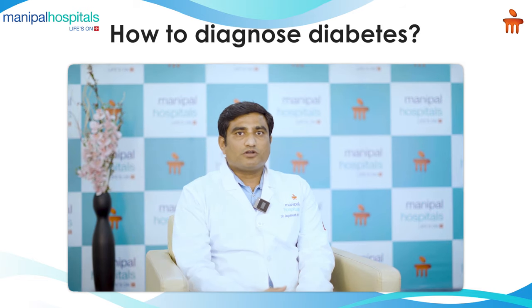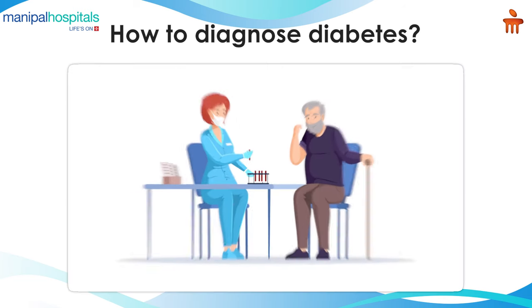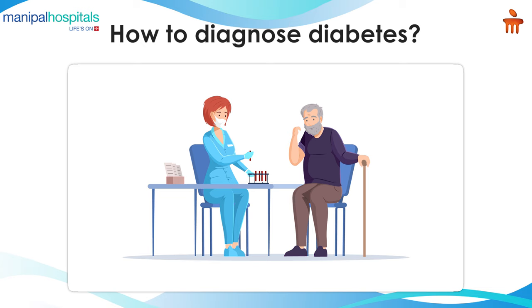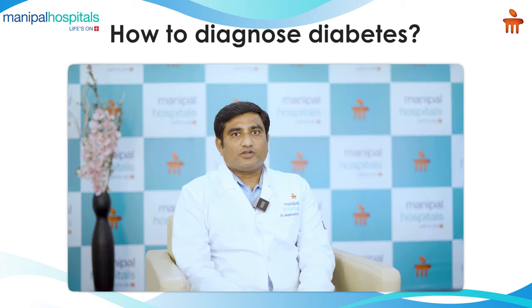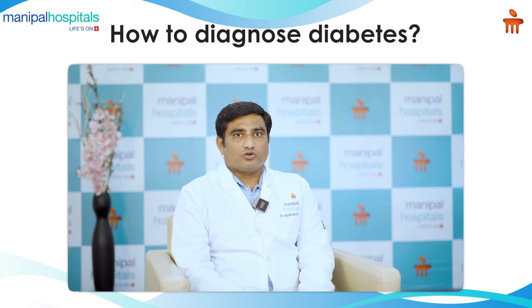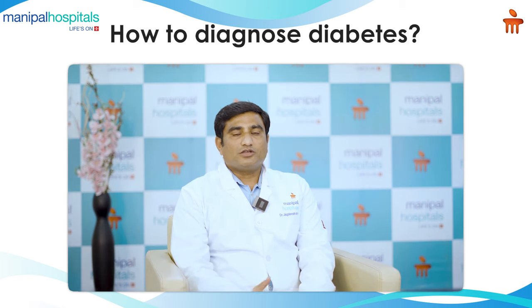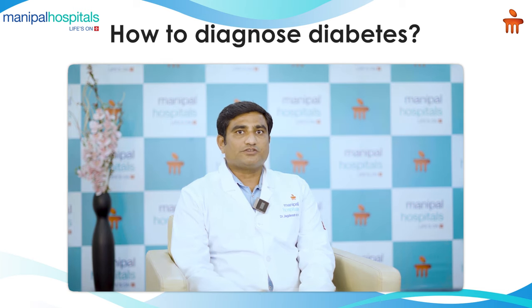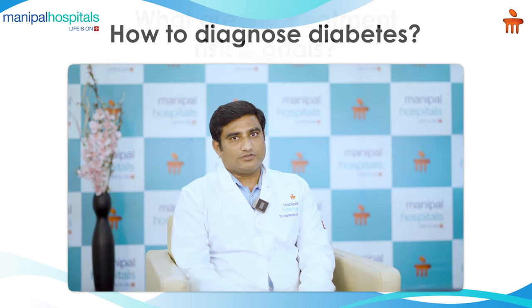Symptomatic patients need to be screened. For asymptomatic patients, those above 35 to 40 years, or those with a first-degree relative with diabetes, or those who are overweight, or those with BP more than 140/90, HDL less than 35, triglycerides more than 250, females with a history of PCOD, patients with gestational diabetes, or those who gave birth to a baby more than 4 kilograms should also be screened.